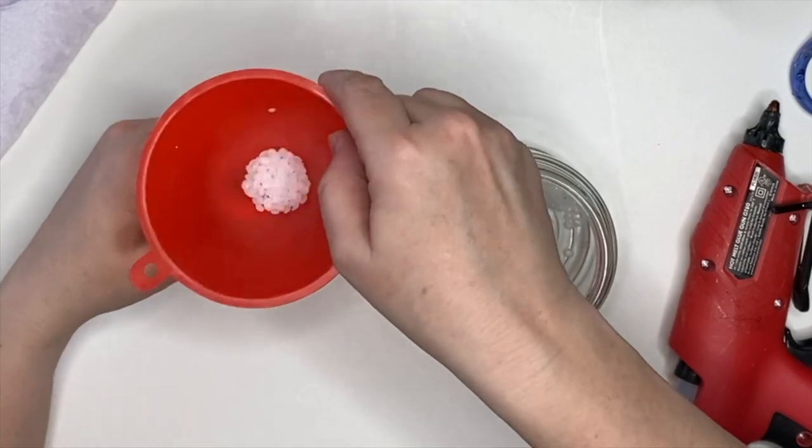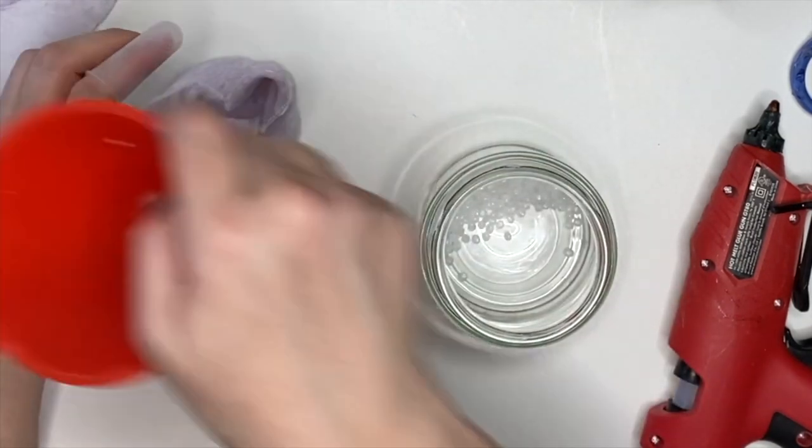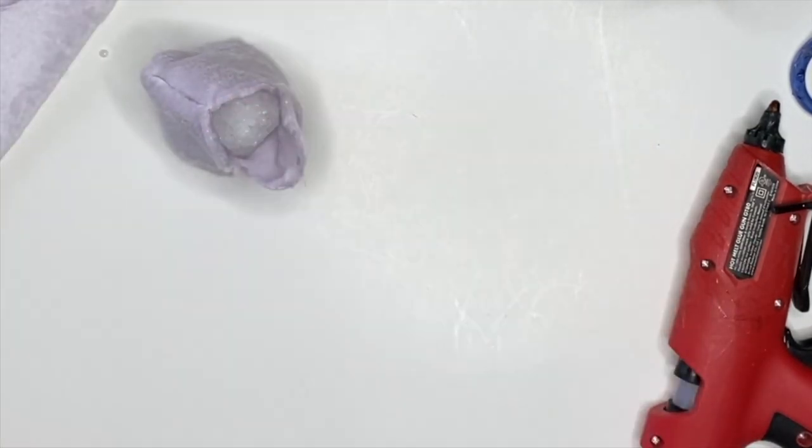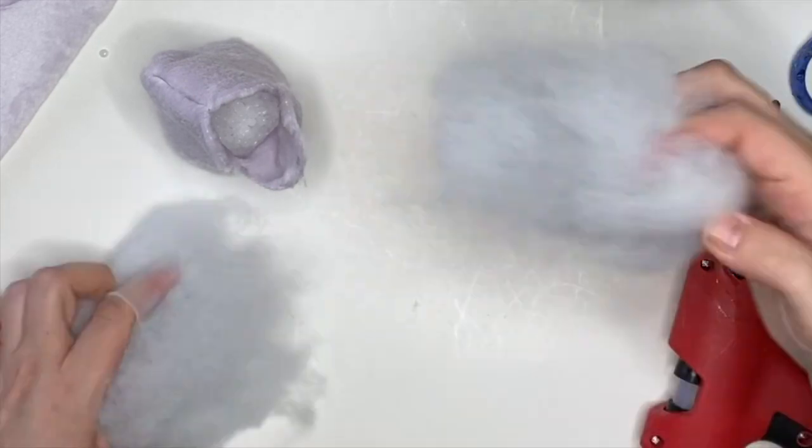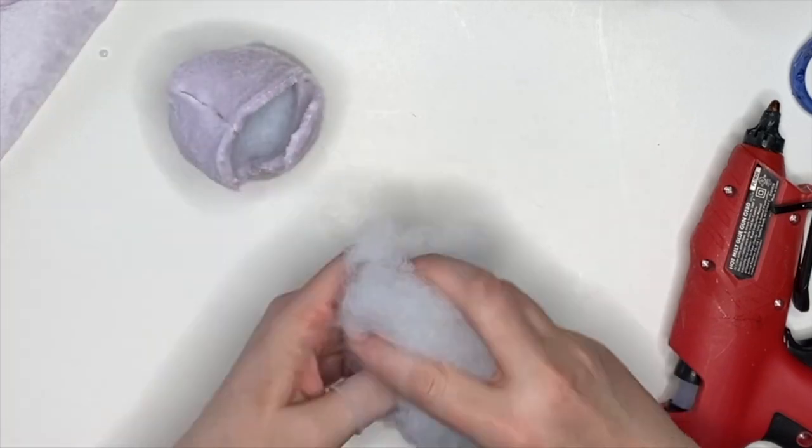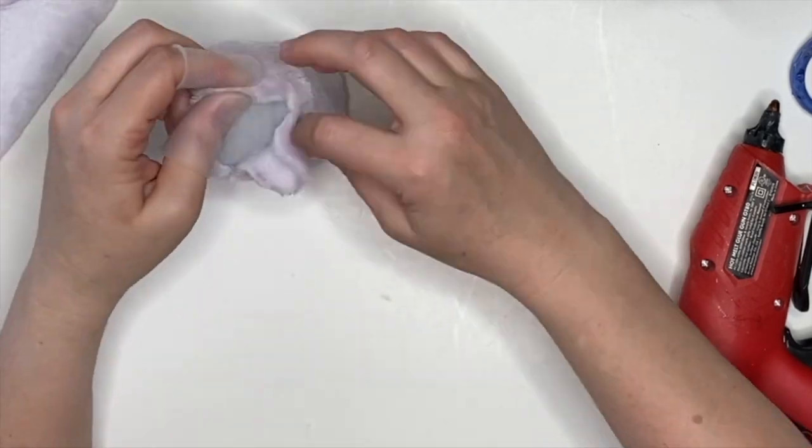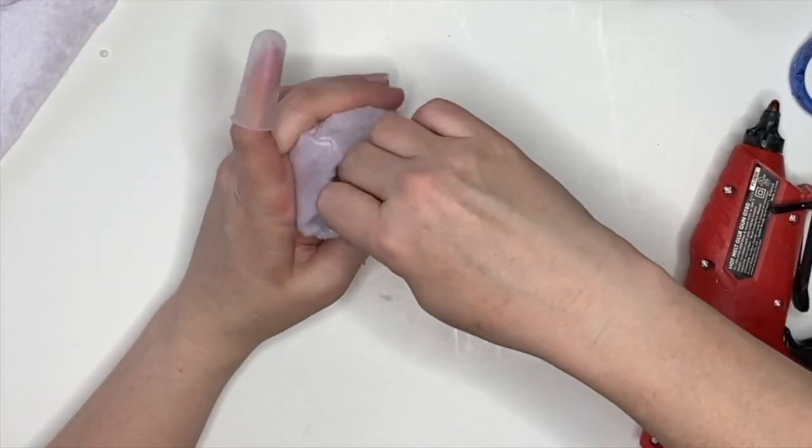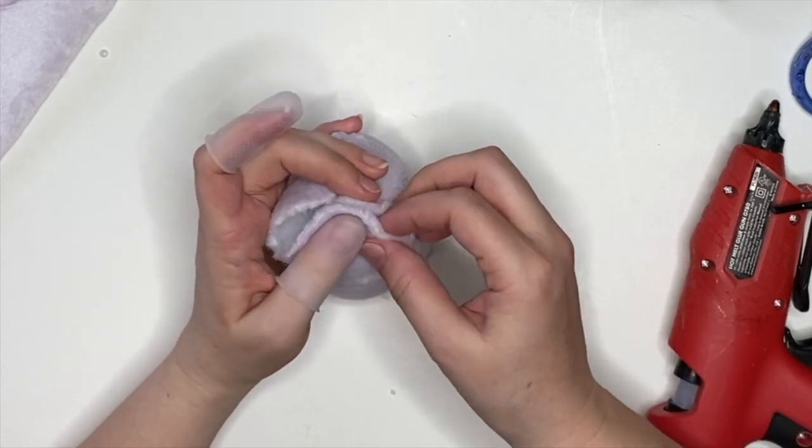Now we're going to fill up using poly beads as our weight, about halfway at the body. Then we're going to take a generous portion of polyfill and tuck that in. Use more than you think you need because you want to be able to squeeze the body and have it bounce back to its original shape.